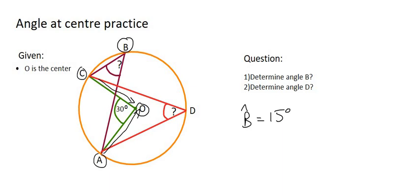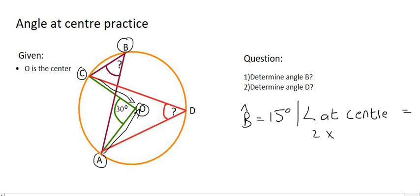Because of that, we can say there is a relationship between them. The relationship is that the angle on the outside of the circle, so that's B, will always be half of the angle at the center. So half of 30 is 15, and the reason is because the angle at the center is always equal to 2 times the angle at the circumference.